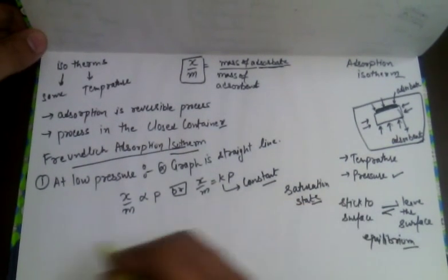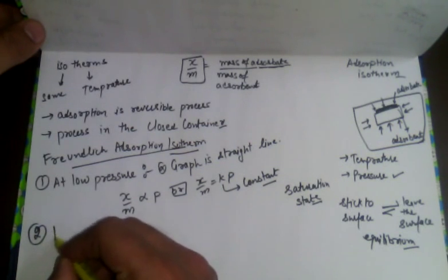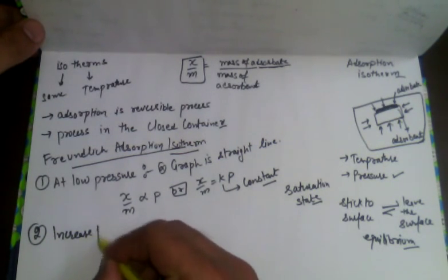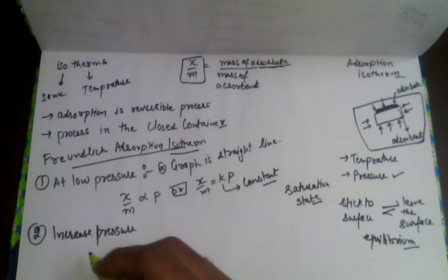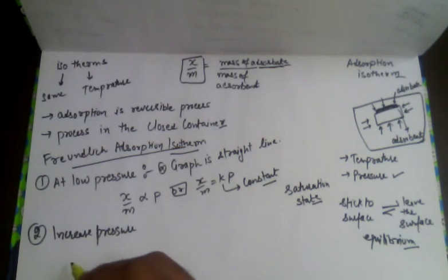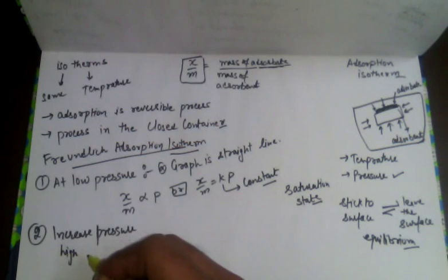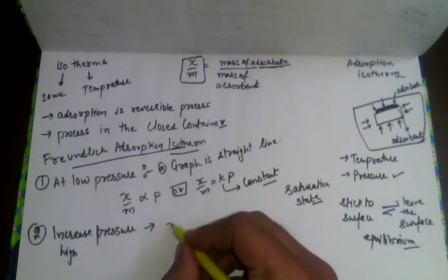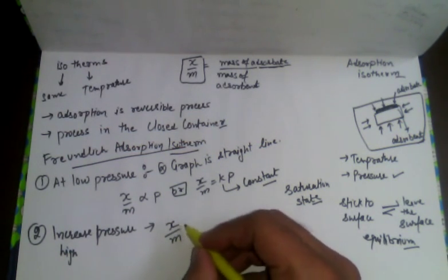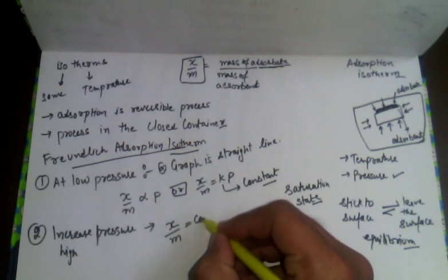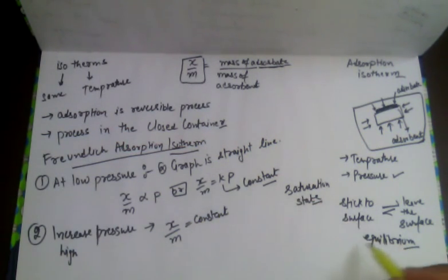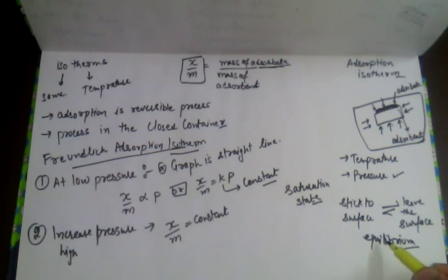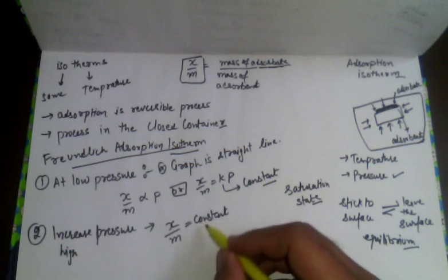When the scientist increased the pressure to a high level, he found that the overall amount of gas adsorbed remains constant because at that point equilibrium was achieved. The value of x/m becomes constant at high pressure.